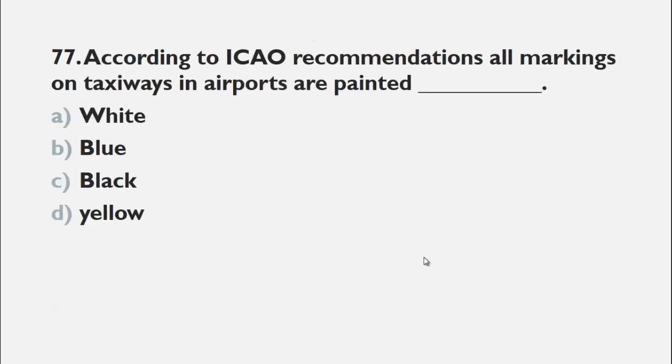MCQs number 77 is, according to ICAO recommendation, all markings on taxiways in airport are painted. The choices are a white, b blue, c black and d yellow. According to ICAO recommendation, markings on taxiways are generally done in yellow color. So, the right choice is d yellow.